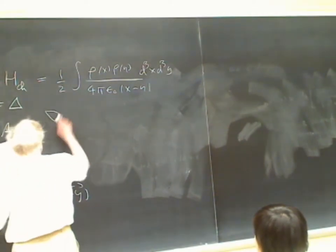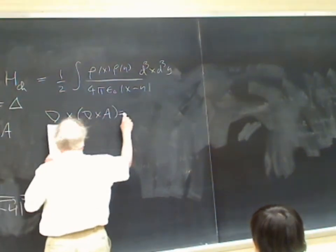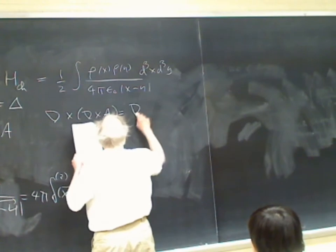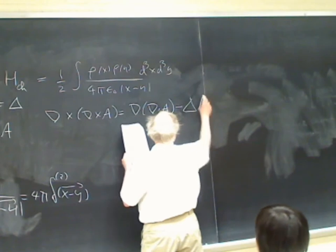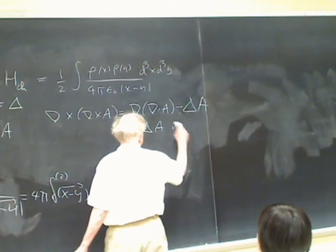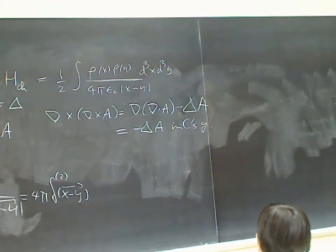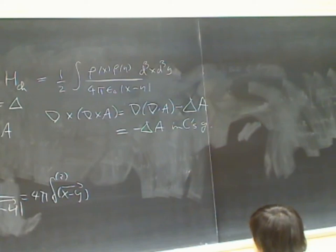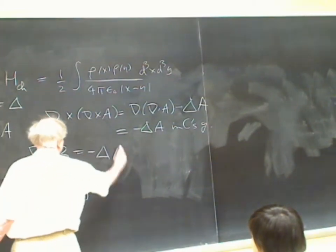Let's look at the vector identity: ∇×(∇×A) = ∇(∇·A) − ∇²A. In the Coulomb gauge, ∇·A = 0, so ∇×B = −∇²A. Looking back at Maxwell's equation in empty space (J = 0): ∇×B = Ė/c², and since φ = 0 and E = −Ȧ, we get ∇×B = −Ä/c².